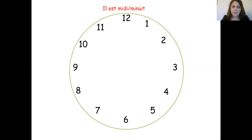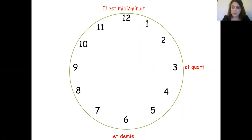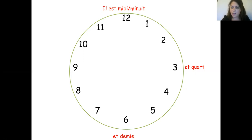For twelve, 'il est midi'; for midnight, 'il est minuit'. When you go to a quarter, same as in English, we add 'et quart'. 'Et demi' means half. So from twelve to six, you would say 'il est une heure', then 'une heure et quart' is quarter past one, and 'une heure et demi' is half past one.